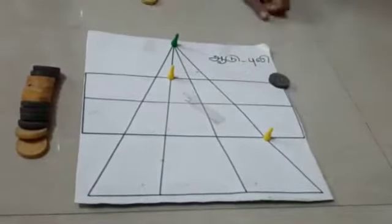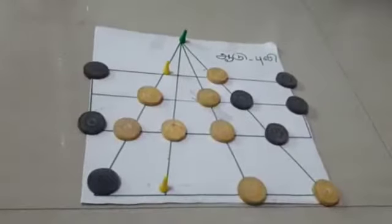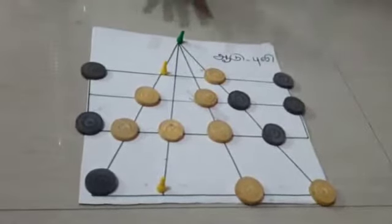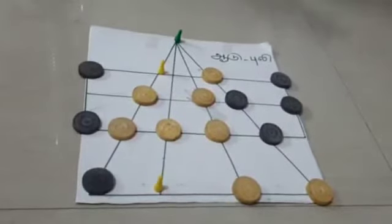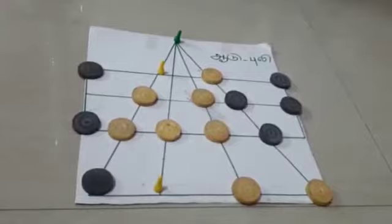This goes on until all the coins are placed. Now, the goat has placed his coins all over the board. But until the goat's coins are placed, the goat cannot be moved. Only after all 15 coins are placed can the goat move.